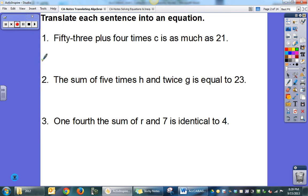Translate each sentence into an equation. 53 plus 4 times c is as much as 21. Let's talk about our key words here. Right here is the word 'is', and that's going to be our clue for our equal sign. So 53 plus 4 times c is as much as 21.